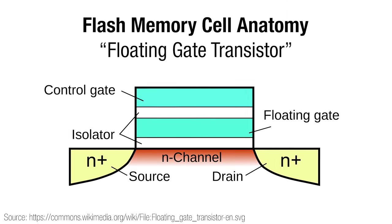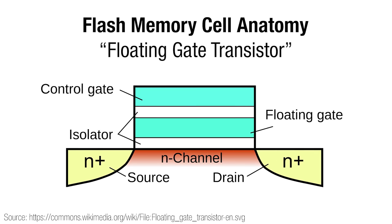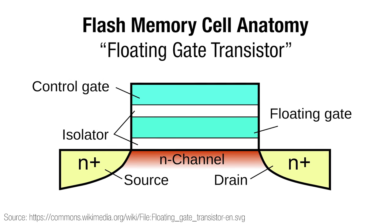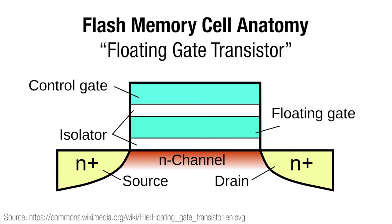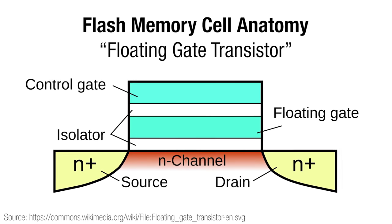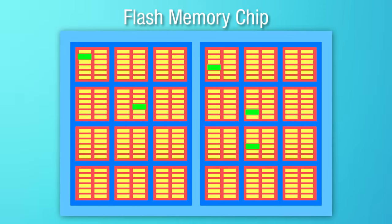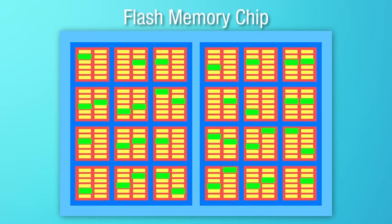SSDs store data in flash memory cells, where each cell can store one bit or more depending on some factors we'll talk about later. The key thing to know is that SSD flash cells can only be written to a certain number of times before they start to degrade. Because of this, SSDs use a technology called Wear Leveling, where it strategically places data around the entire SSD to maximize the life of the SSD by not writing to too many cells individually, so it maximizes how long all the cells last.